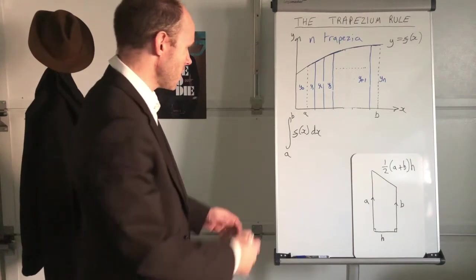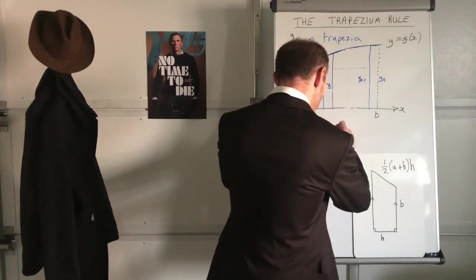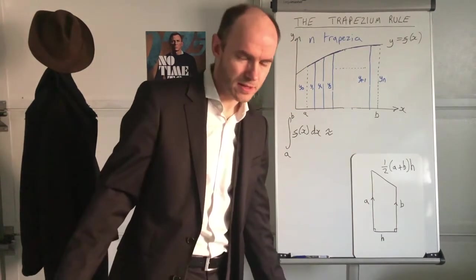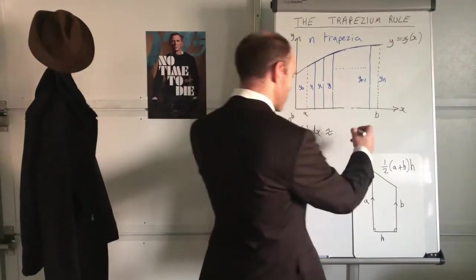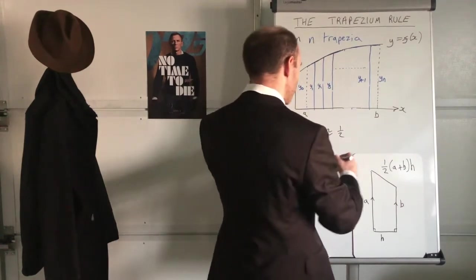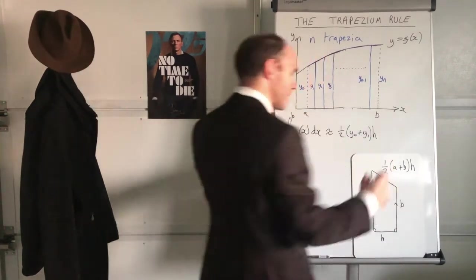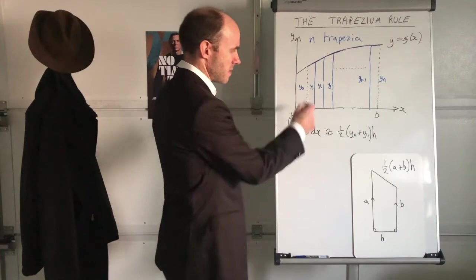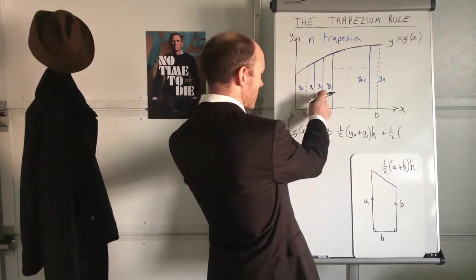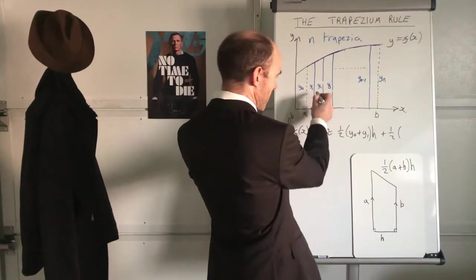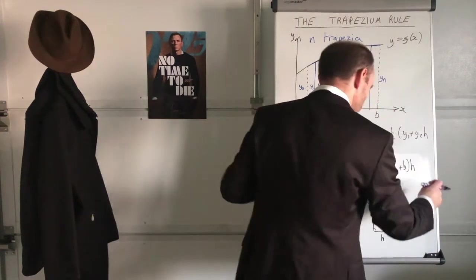What I'm going to do is write down, this is approximately, because it's an approximation, isn't it, it's not exactly the same, it's approximate. And we'll have, let's have the area of the first trapezium to begin with: half, and then it's going to be y zero plus y one times by h. See that, half y zero plus y one times by h. And then the second trapezium, half, what's that going to be? Y one plus y two, so that's the second trapezium there I'm talking about, y one plus y two h.